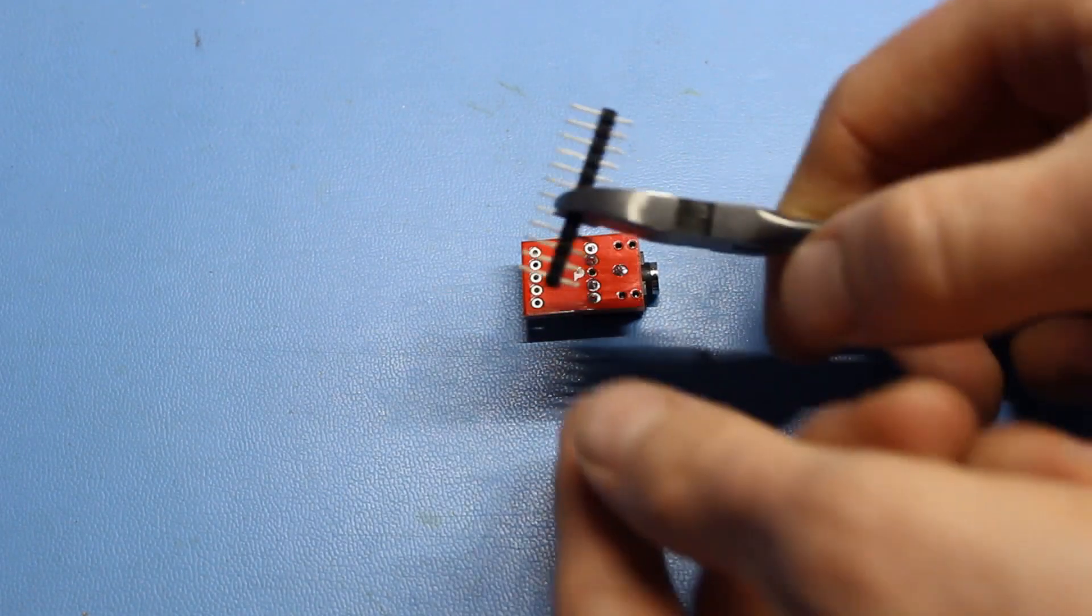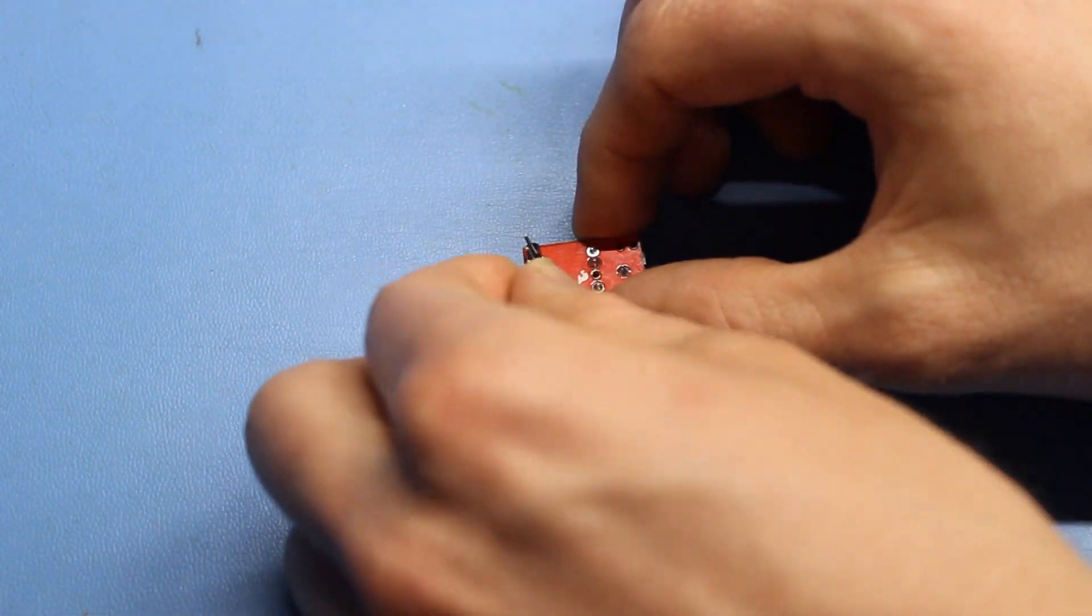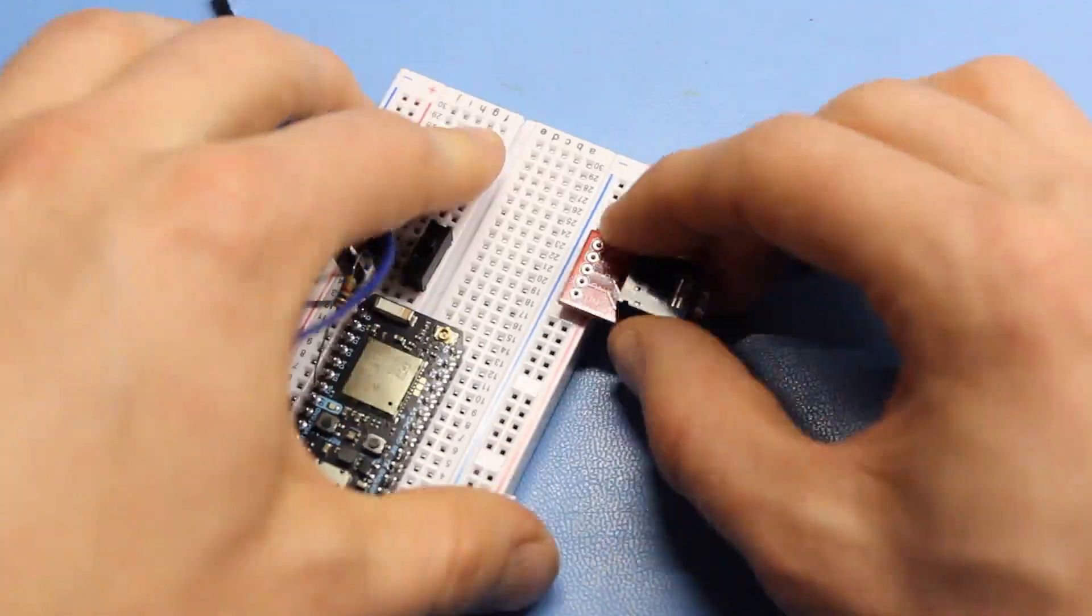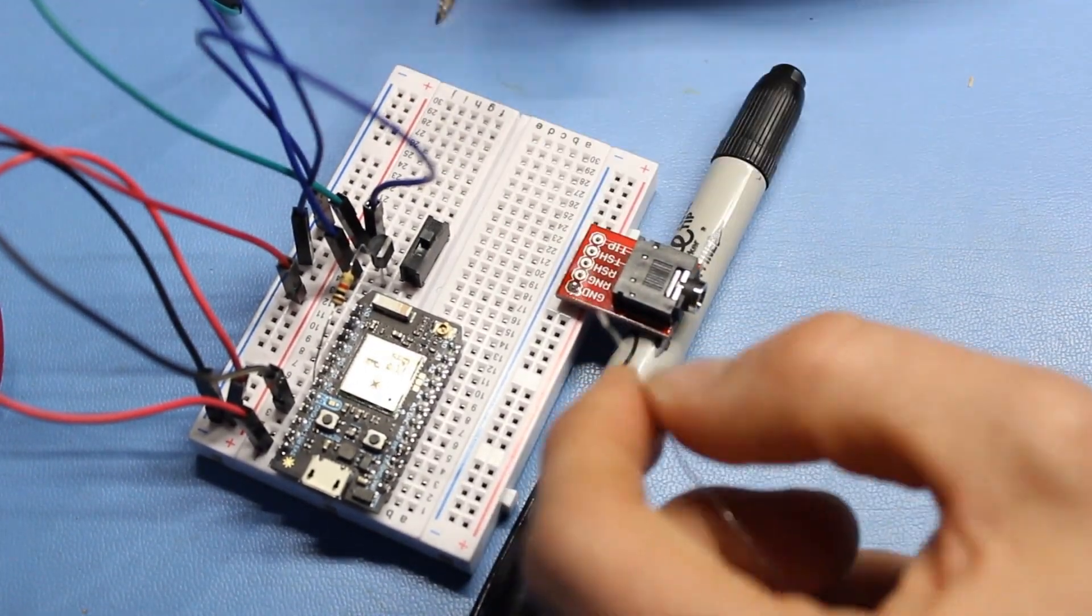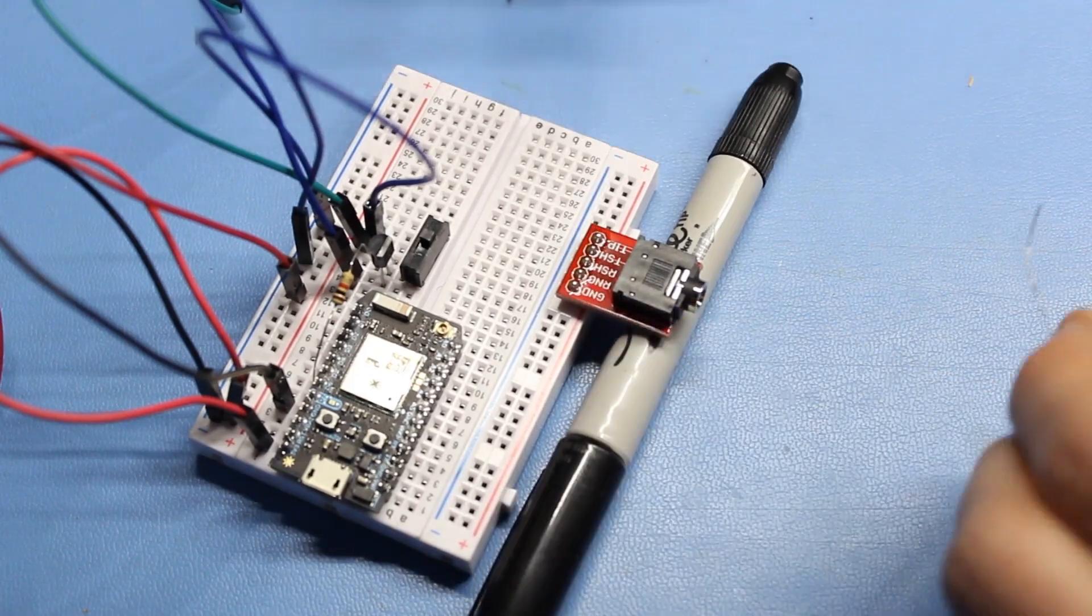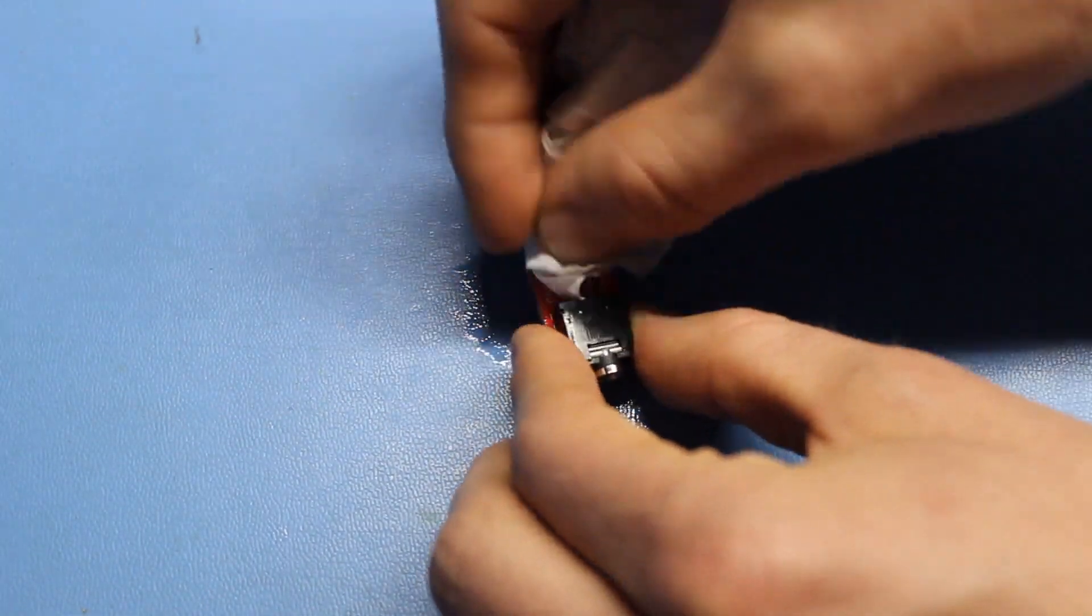For this board, we'll need five header pins. Safety goggles are highly recommended. Attach the pins to the bottom of the board and flip it over. I recommend placing the pins into a breadboard and using a pen to support the board while soldering. Once again, clean any residue flux off the board with something like rubbing alcohol. Pat it dry and the board's ready to use.